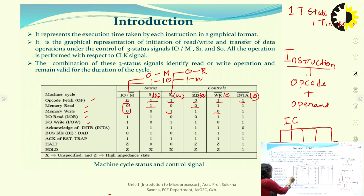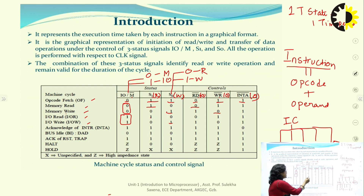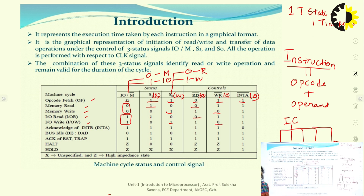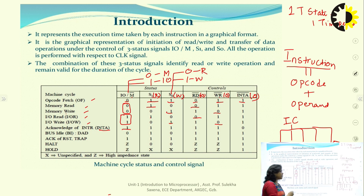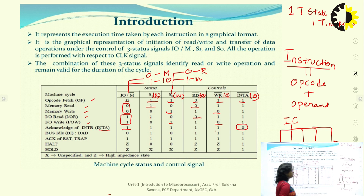For IO read and IO write, IO/M̄ will be 1. All remaining signals are the same: S1 is 1 for read, S0 is 1 for write; R̄D̄ is 0 for read and W̄R̄ is 0 for write. When S1 and S0 are both 1 and we are accessing IO, it is the INTA̅ machine cycle — interrupt acknowledgement — because hardware interrupts come from IOs. In that case, INTA̅ signal will be 0 and the other two control signals are inactive.